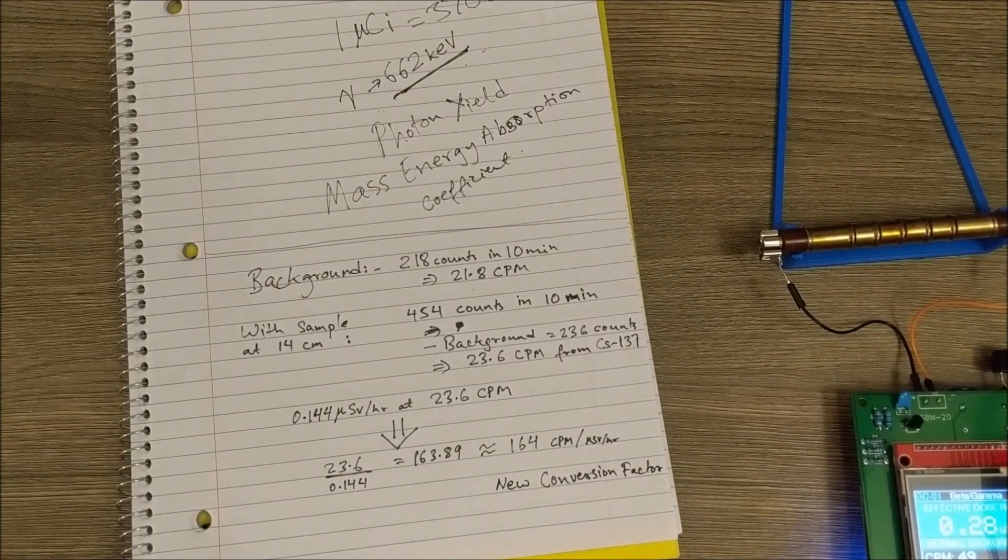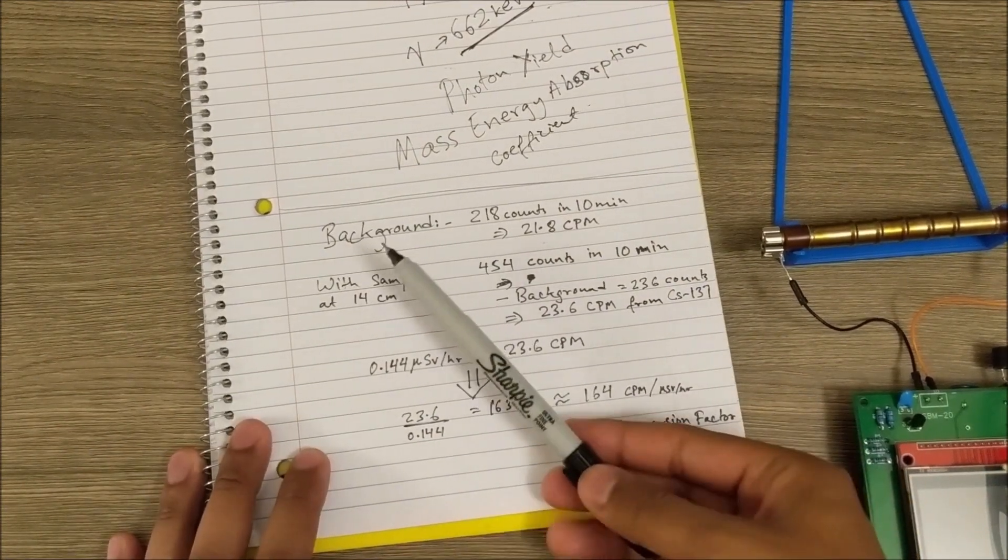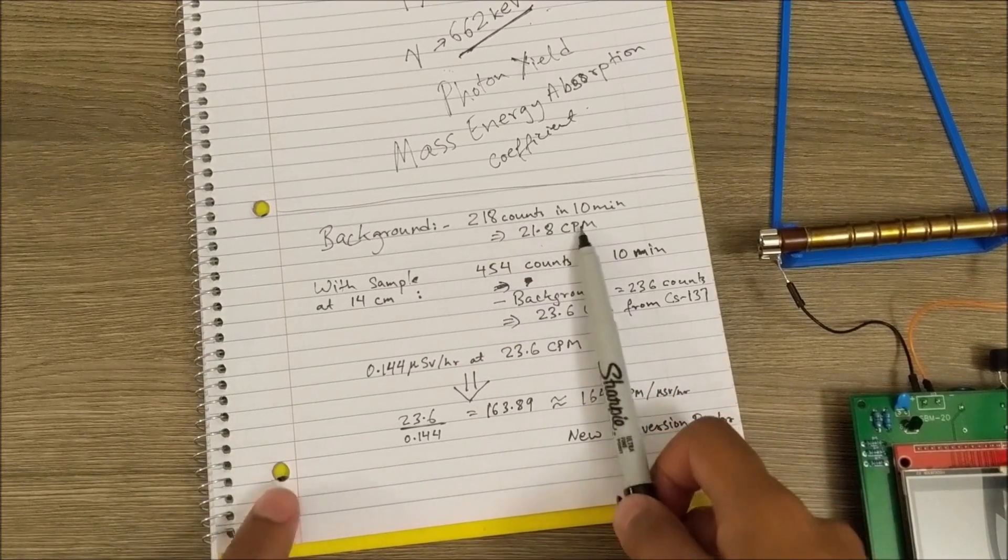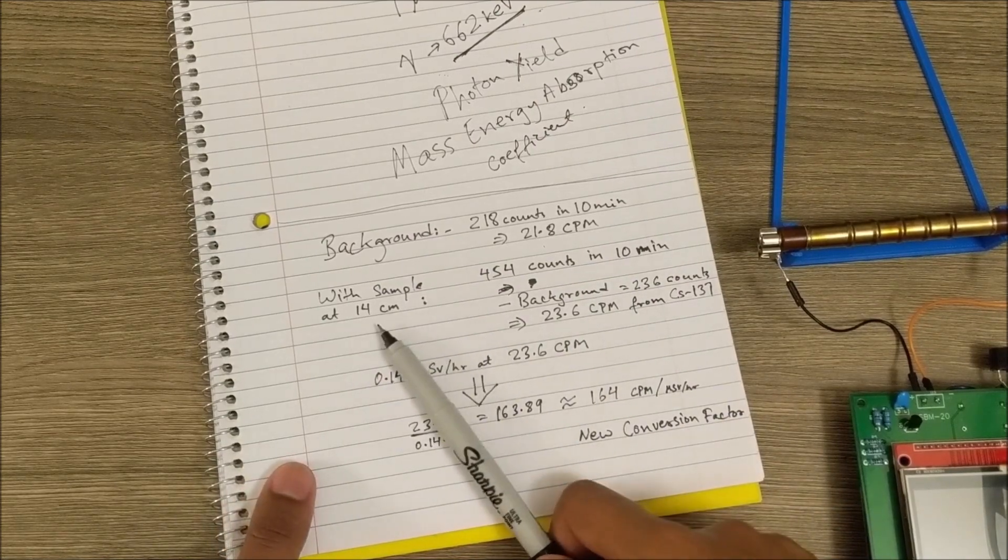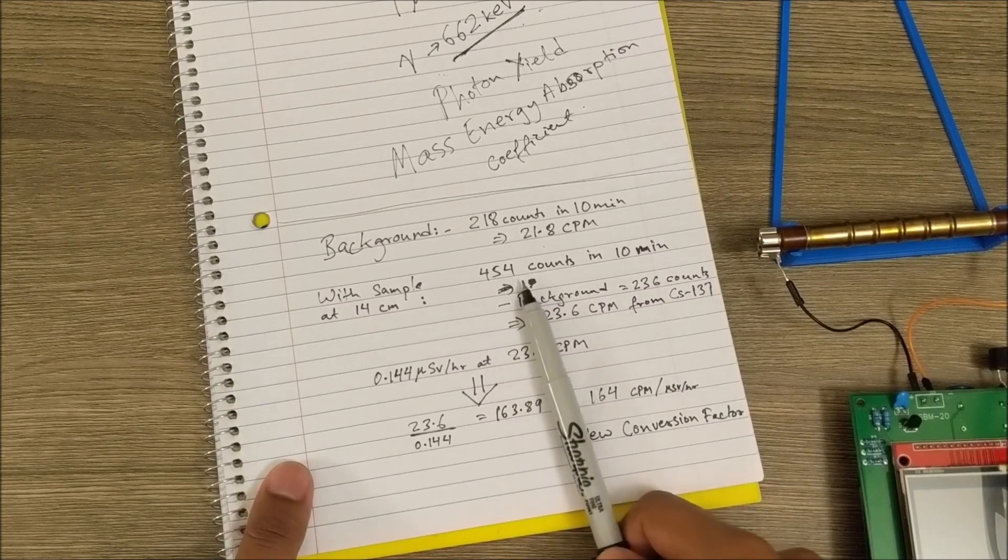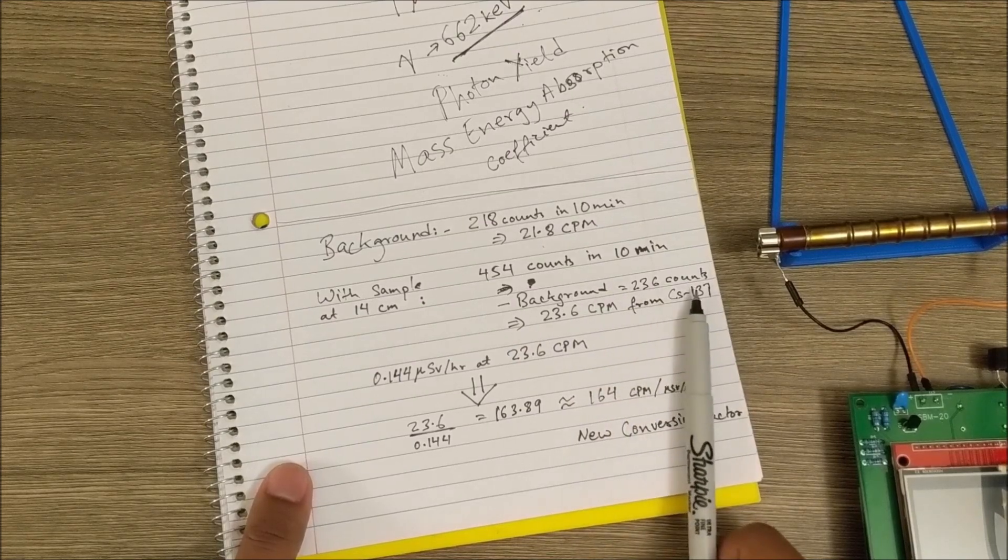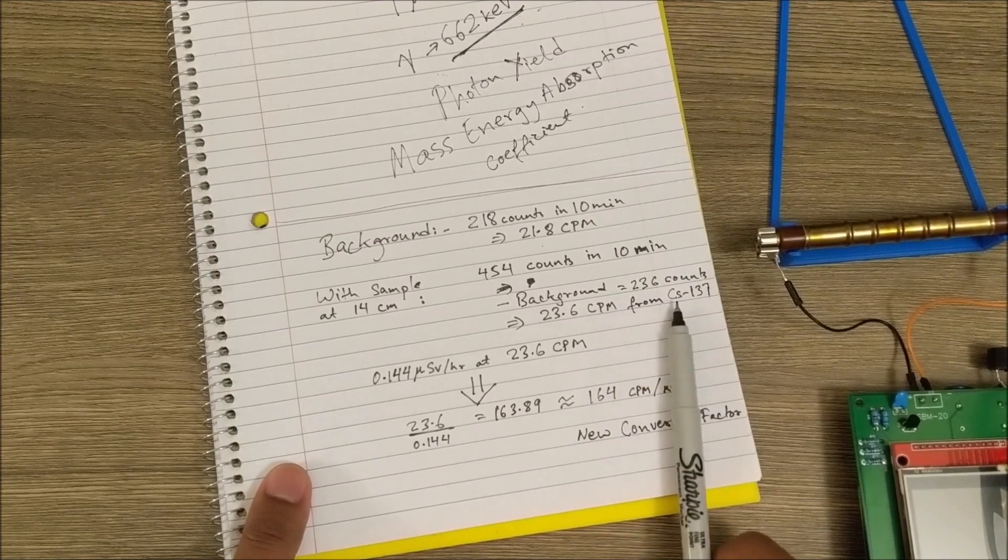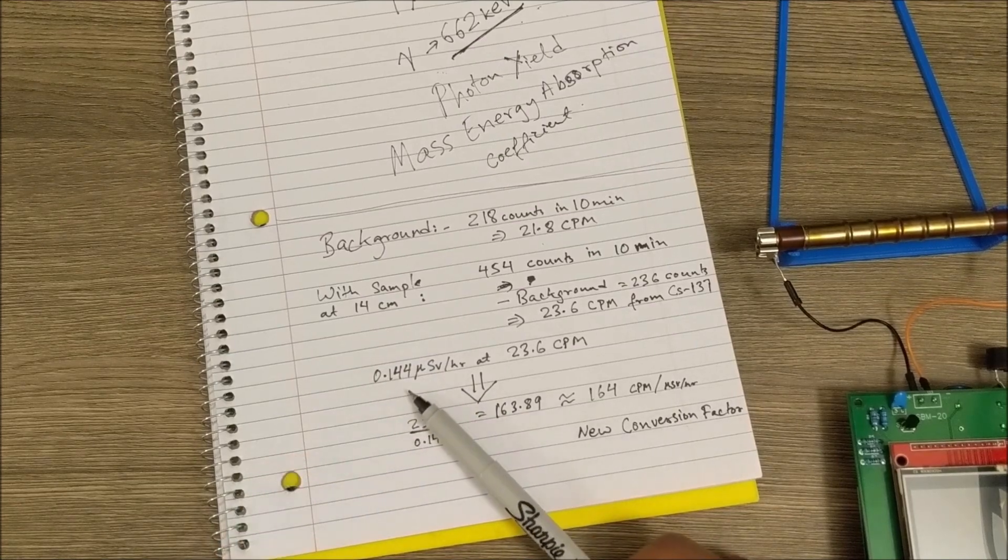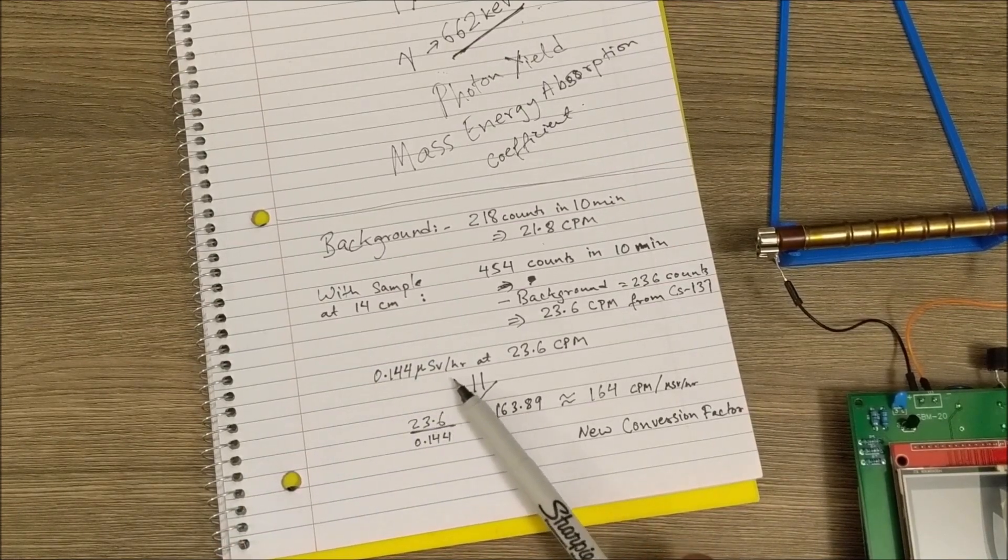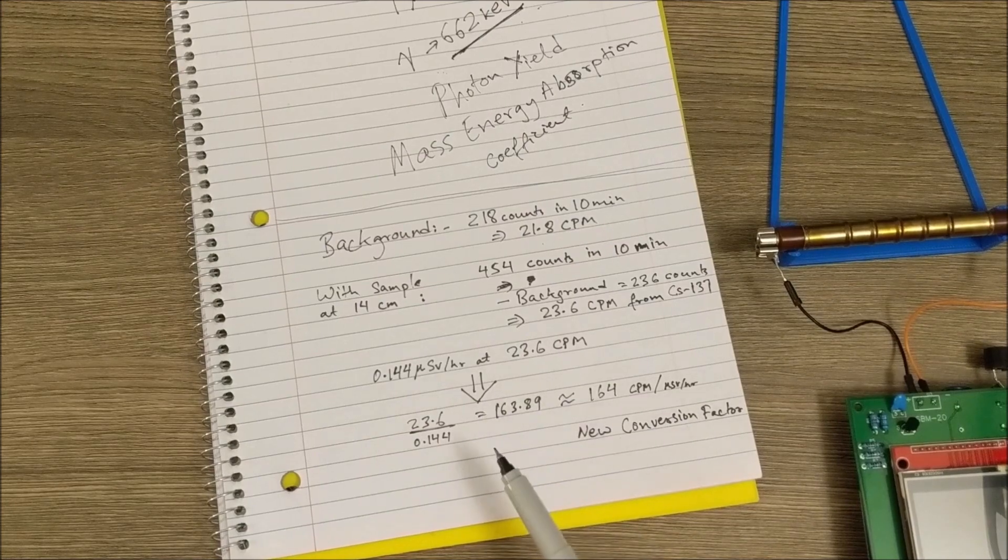Here's our results. We had a background count of 218 in 10 minutes, which gives us 21.8 counts per minute on average. With the sample at 14 centimeters from the tube, we got 454 counts in the same 10 minutes. Subtracting the background, we get 236 additional counts, which means 23.6 counts per minute coming from our isotope on average. Our expected dose rate at that distance was 0.144 microsieverts per hour, which means that our conversion factor of counts per minute per microsievert per hour is now 163.89, or about 164.